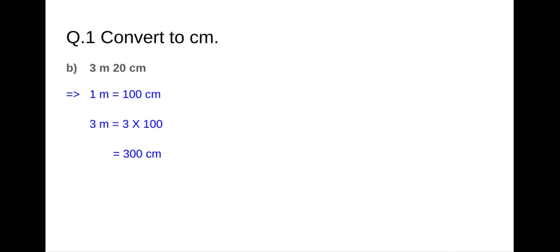Now the question is 3 meters and 20 centimeters. So let's add the 20 to 300 to get the final answer. Therefore 3 meters 20 centimeters equals 300 plus 20, that is 320 centimeters.